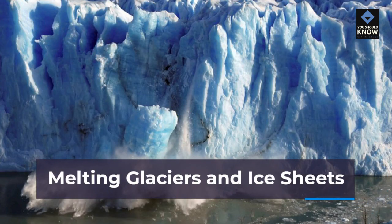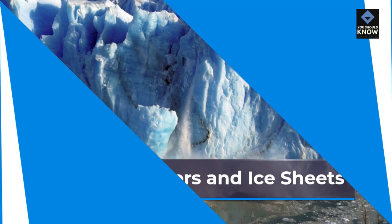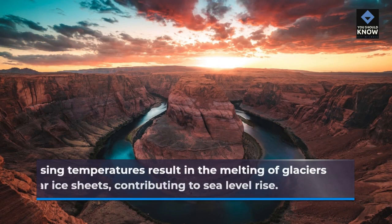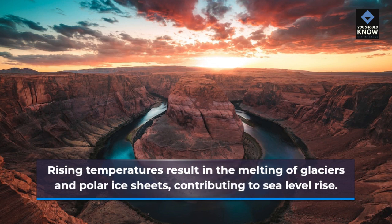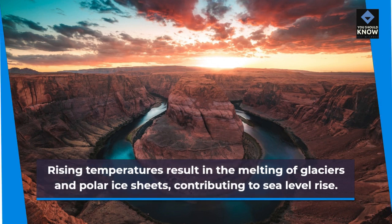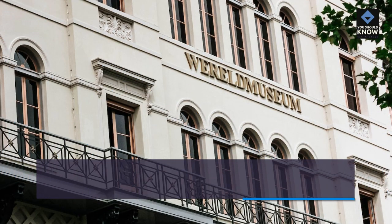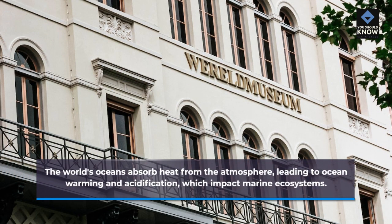Melting glaciers and ice sheets: rising temperatures result in the melting of glaciers and polar ice sheets, contributing to sea level rise. Ocean warming and acidification: the world's oceans absorb heat from the atmosphere, leading to ocean warming and acidification, which impact marine ecosystems.